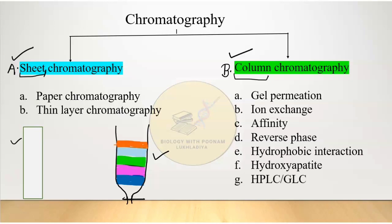Sheet chromatography is further divided into two types: paper chromatography and thin layer chromatography. Column chromatography is further divided into several types: gel permeation chromatography, ion exchange chromatography, affinity chromatography, reverse phase chromatography, hydrophobic interaction chromatography, hydroxyapatite chromatography, HPLC, and GLC.